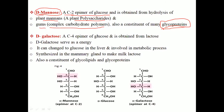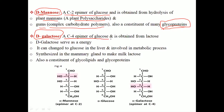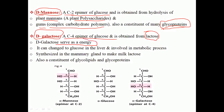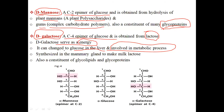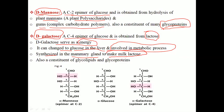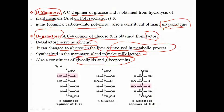Next is D-galactose. D-galactose is also an epimer of glucose — specifically the C4 epimer — and is obtained from lactose, which is a disaccharide found in milk. Galactose serves as an energy source and can be converted to glucose in the liver, where it is involved in different metabolic processes. Galactose is also synthesized in the mammary glands to make milk lactose.